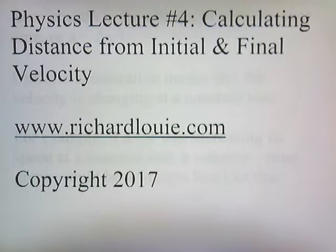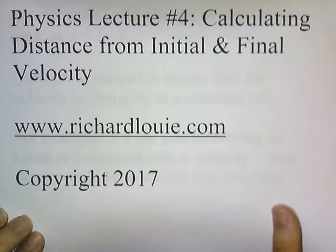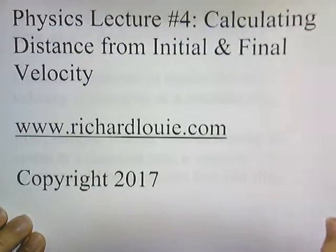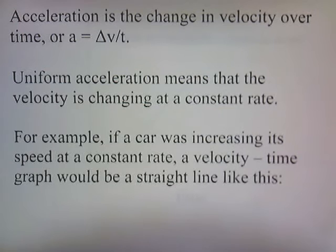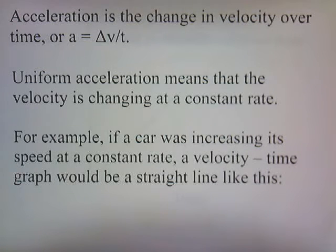Physics lecture number four: calculating distance from initial and final velocity. Acceleration is the change in velocity over time, or A equals delta V divided by T. Uniform acceleration means that the velocity is changing at a constant rate.